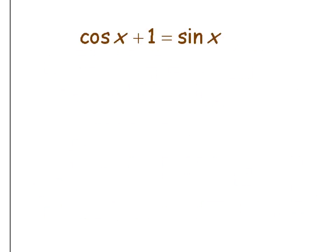For the last example in this factoring series, we have cosine x plus one equals sine x. There's nothing that directly relates sine and cosine to help us factor, but since sine squared and cosine squared are related, maybe we could square both sides and then make substitutions based on Pythagorean identities.